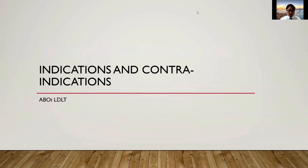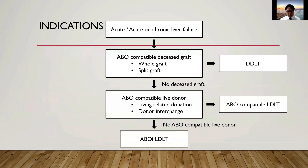As you may know, the indications and contraindications for ABOI LDLT would be more or less similar to ABO compatible LDLT. We include patients with acute or acute-on-chronic liver failure. We will put the patient on the waiting list and see whether an ABO compatible deceased graft would be available, in terms of whole graft or split graft.